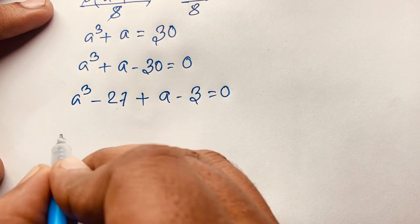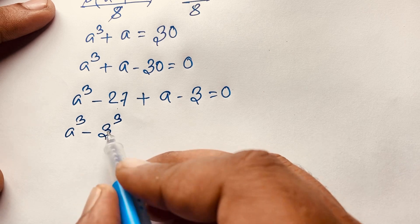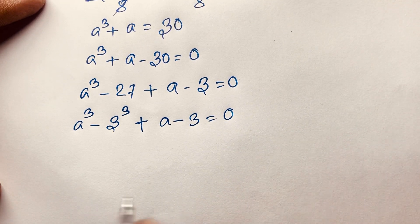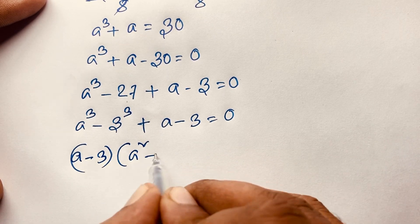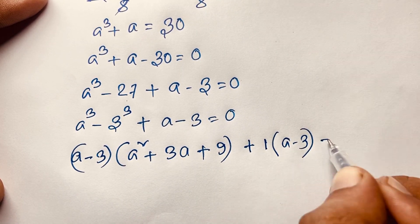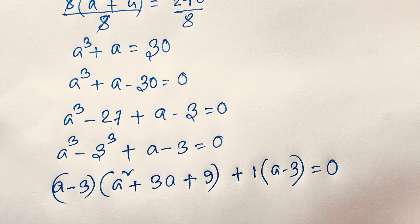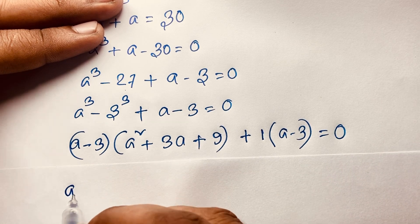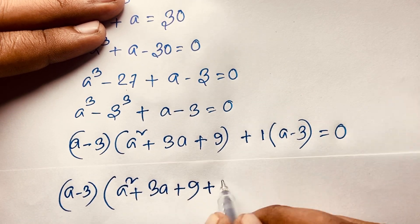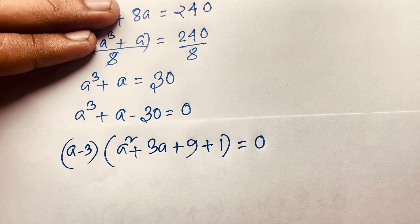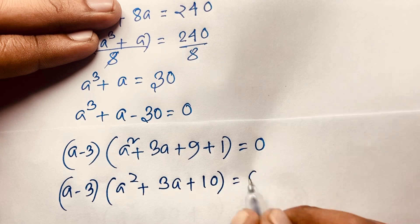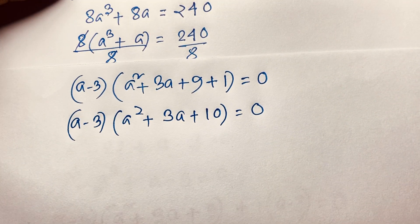Here a^3 - 27 is a difference of cubes with b = 3, since 3^3 = 27. Using a^3 - b^3 = (a - b)(a^2 + ab + b^2), we get (a - 3)(a^2 + 3a + 9) + (a - 3) = 0. Factoring out (a - 3) gives (a - 3)(a^2 + 3a + 10) = 0.